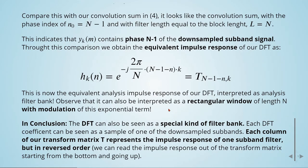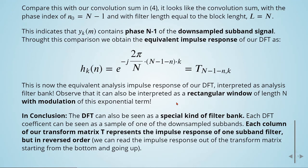In conclusion, the DFT can also be seen as a special kind of filter bank. Each DFT coefficient can be seen as a sample of one of the downsampled subbands. Each column of our transform matrix T represents the impulse response of one subband filter, but in reversed order. We can read the impulse response from the transform matrix starting from the bottom and going up.